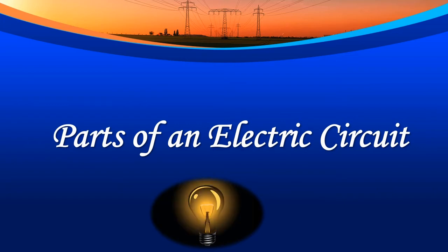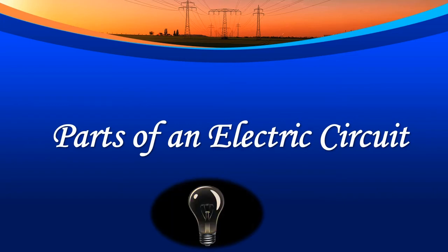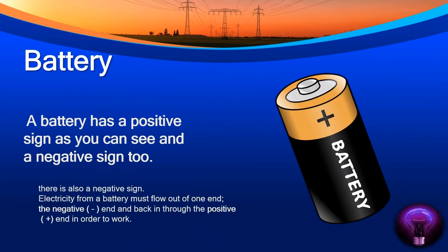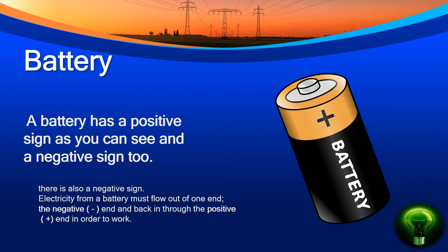Parts of an electric circuit. Battery: a battery has a positive sign and a negative sign. Electricity from a battery must flow out of one end — the negative end — and back in through the positive end, in order for it to work.